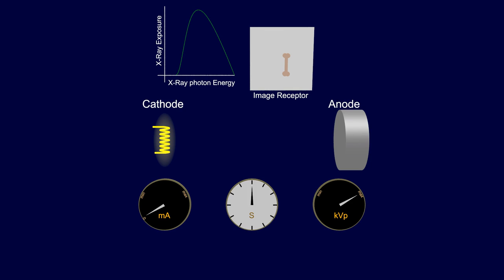In this illustration, the KVP is constant for all exposures. The minimum MA produces a small amount of electrons and needs a long time to reach the set exposure. This is seen on the graph and image receptor.